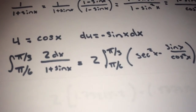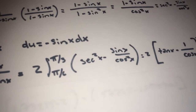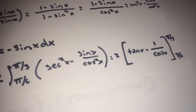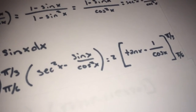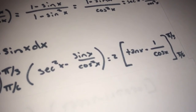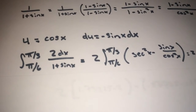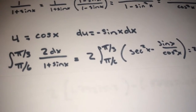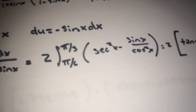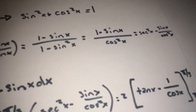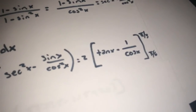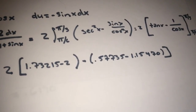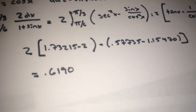Plugging that in, you get 2 times the quantity tangent x minus 1 over cosine squared x, evaluated from pi over 6 to pi over 3. I pulled out the 2 and applied the identities we derived. Plugging the bounds into a calculator gives the final numerical answer.